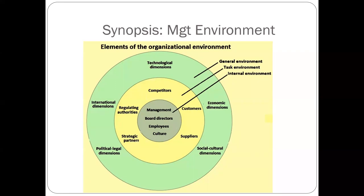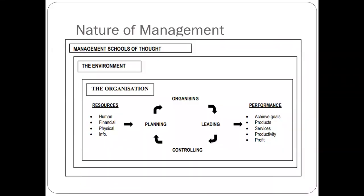For example, Apple is an innovative company, so your management style should encourage innovation to match their culture. The task environment includes competitors, customers, suppliers, and regulators — all affecting how you operate. The general environment covers technology, demographics, politics, and climate change on a global scale, all of which also impact how you operate.